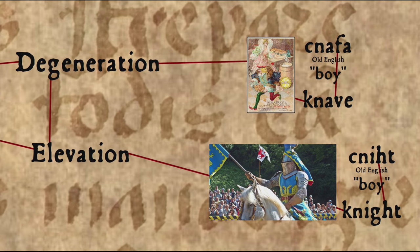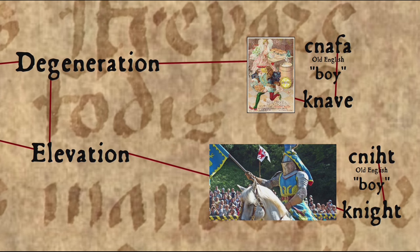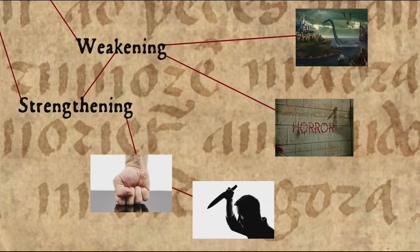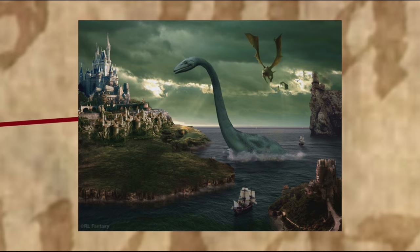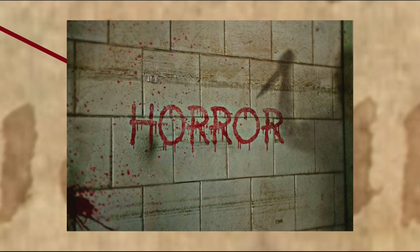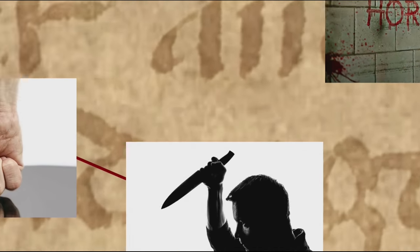Similar to this type of semantic shift is the degeneration or elevation axis. The Old English words 'kaffe' and 'knicht' both meant boy, but the former was demoted to become 'knave' and the latter was elevated to become 'knight.' Weakening and strengthening of semantic meaning is another axis, though weakening is by far the more common. Something that's awesome, fantastic, and fabulous isn't usually characterised by literal awe, fantasy, or fable. And something that's terrible or horrible doesn't usually invoke actual terror or horror — you can sort of think of them as hyperbole or exaggeration that becomes banal. One example of the opposite might be 'kill,' which seems to have originally meant to strike or hit, but later was strengthened to mean put to death.